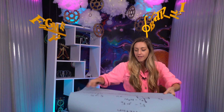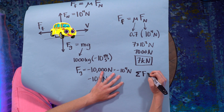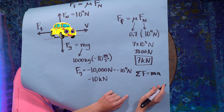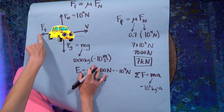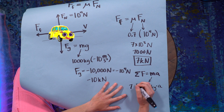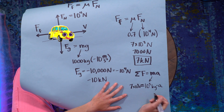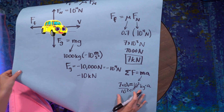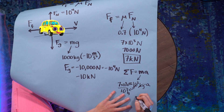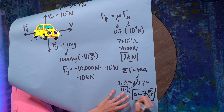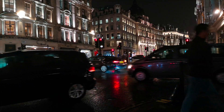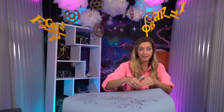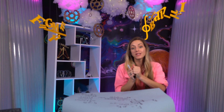Let's use F = ma to find the acceleration. Net force equals mass times acceleration: 7 × 10³ N = 10³ kg × a, giving acceleration = 7 m/s². That seems pretty reasonable — a decent amount of acceleration, but not going to knock you out. If this was all happening on a rainy day so the road was wet, we'd use the coefficient of friction for rubber on wet concrete, which is smaller. A smaller mu gives a smaller friction force, and that's why cars slide more and take longer to stop on wet roads.